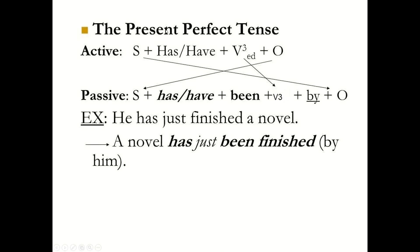Let's look at the present perfect tense in the active voice and in the passive voice, and how we can make an active voice sentence into a passive voice sentence. In the active voice, we begin the sentence with subject plus has or have plus the verb in the past participle form, then the object.